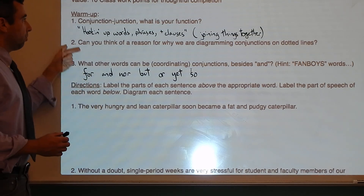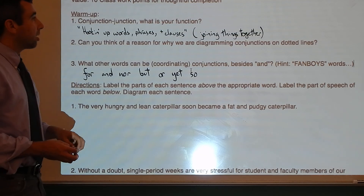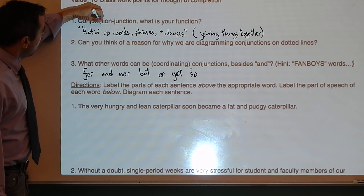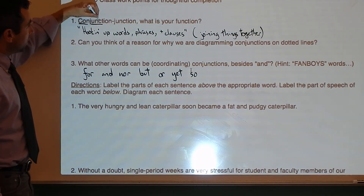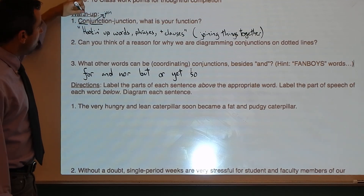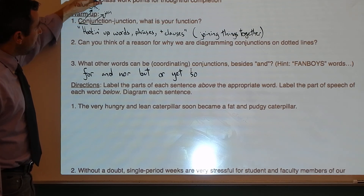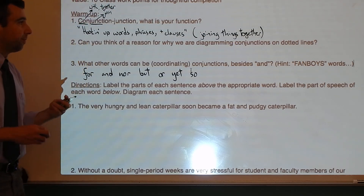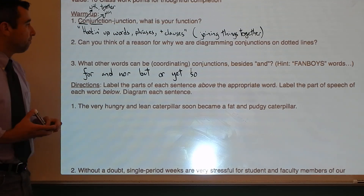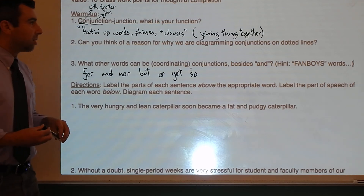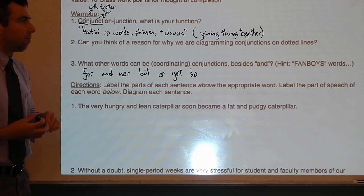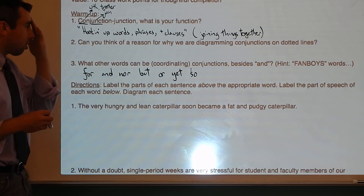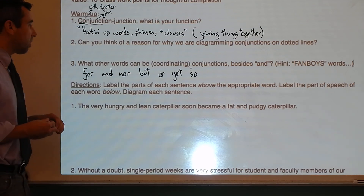Conjunction junction, what is your function? It is hooking up words, phrases, and clauses — if you know your Schoolhouse Rock. You could also say joining things together. The Latin roots have some meaning: 'junct' means to join, and 'co' or 'con' can mean with or together. So literally a conjunction is joining things together. Can you think of a reason why we diagram conjunctions on dotted lines? To call attention to the things being joined, because the conjunction only shows a relationship — it's not a thing or a quality in and of itself.